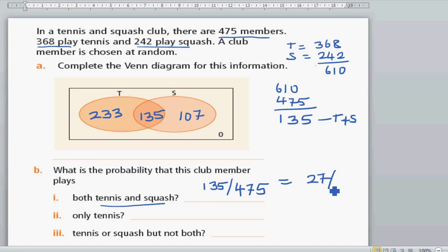And only play tennis - look at this. 233 are the people who play only tennis. That is 233 out of 475.